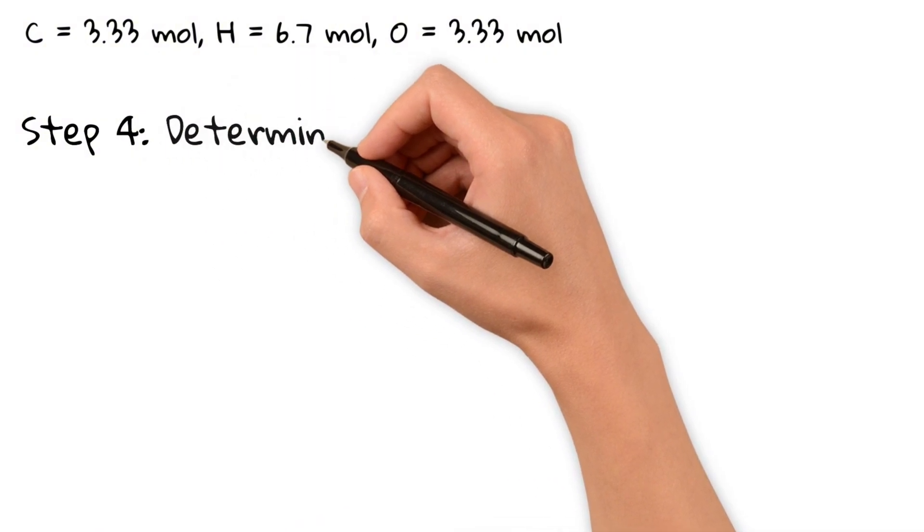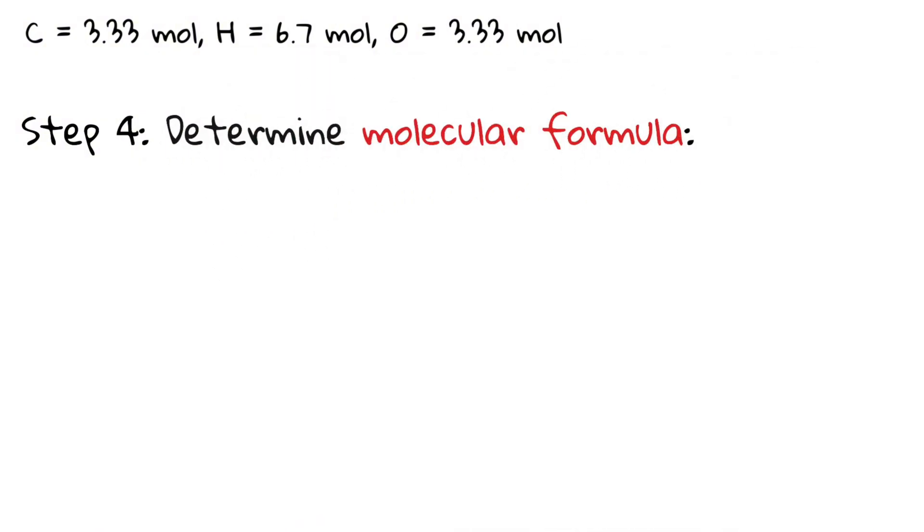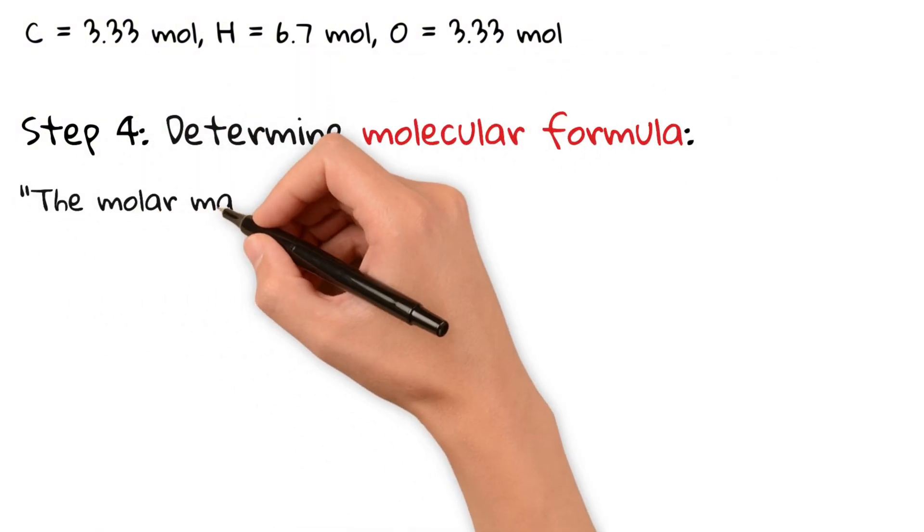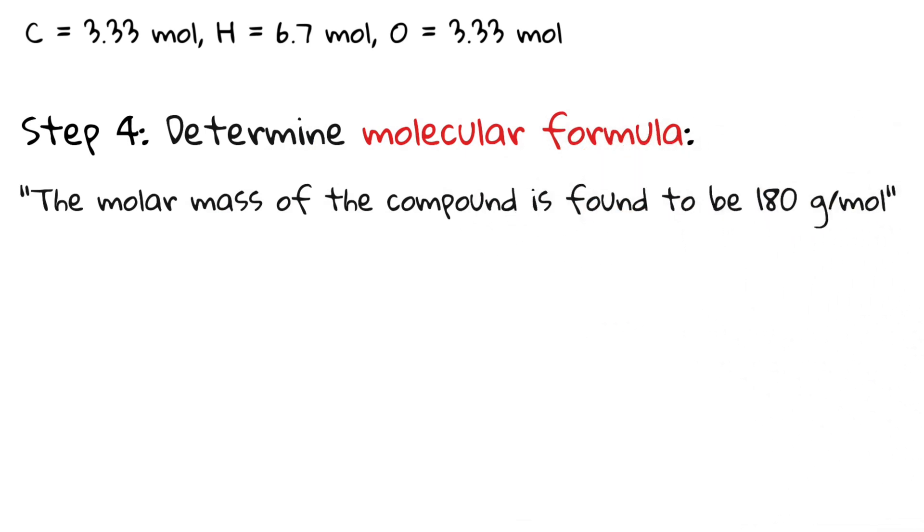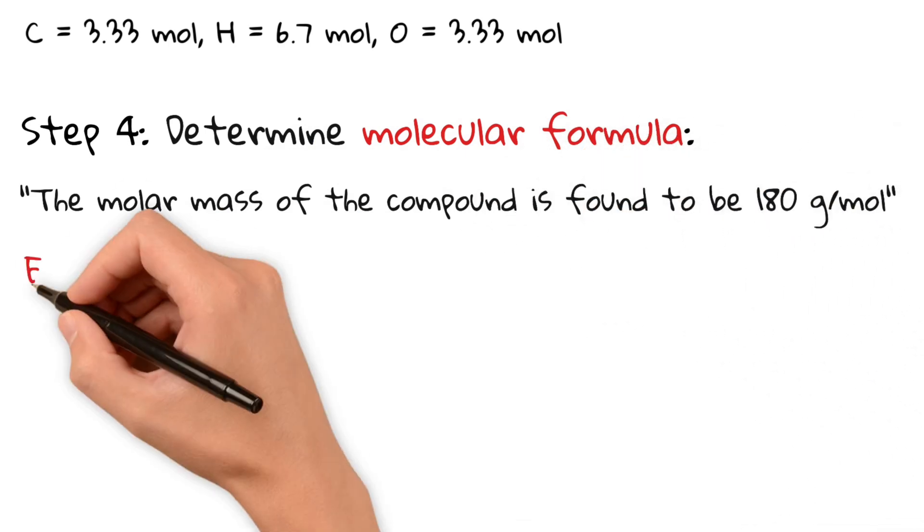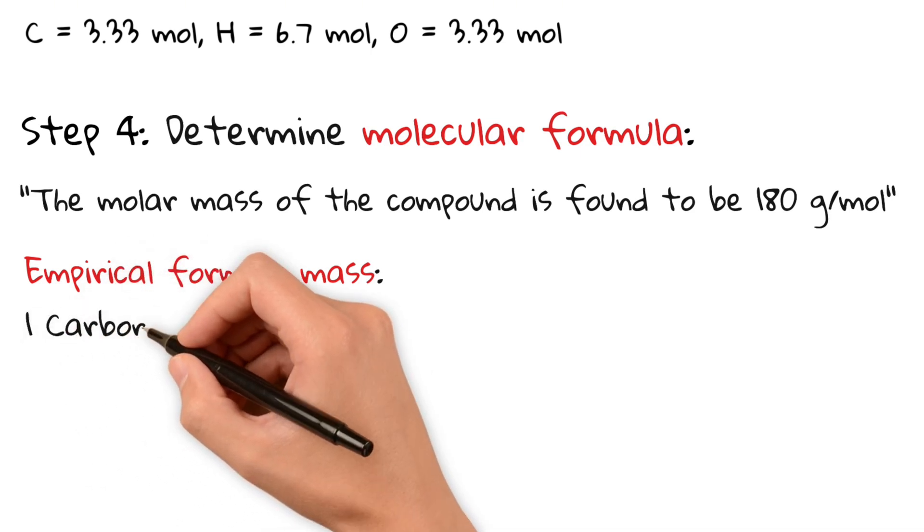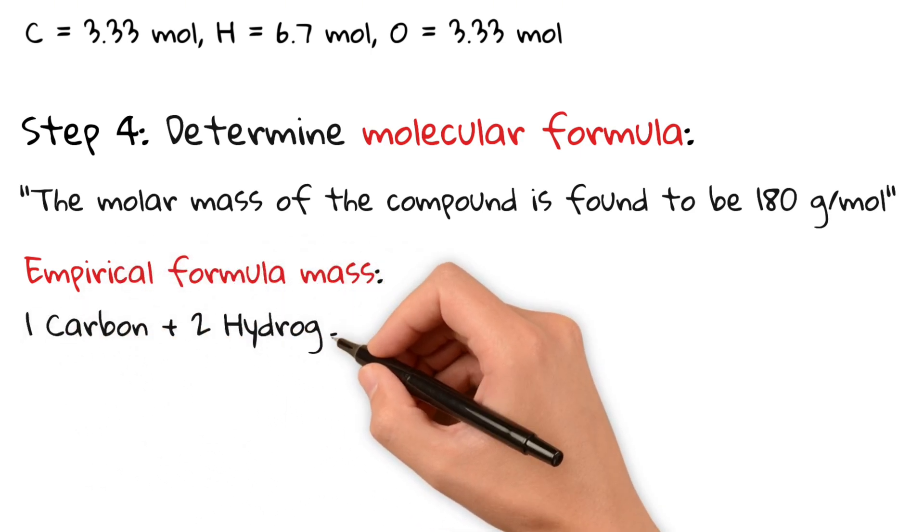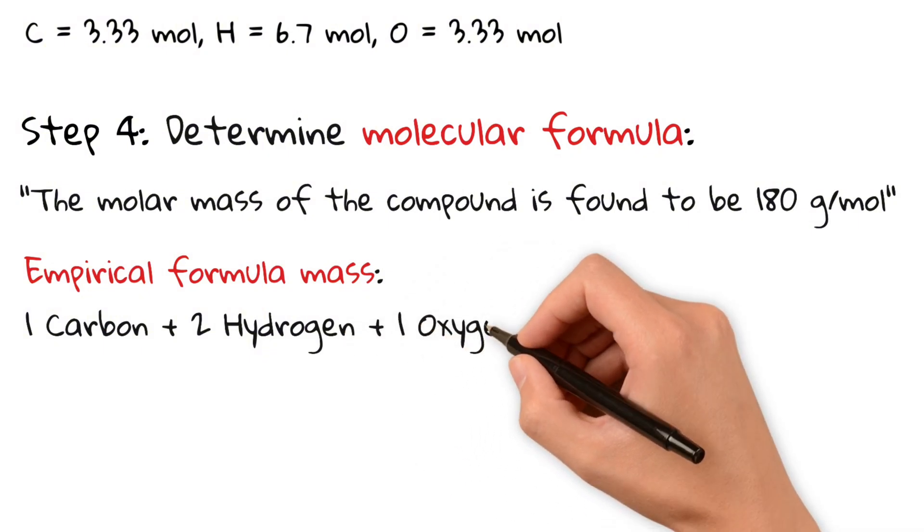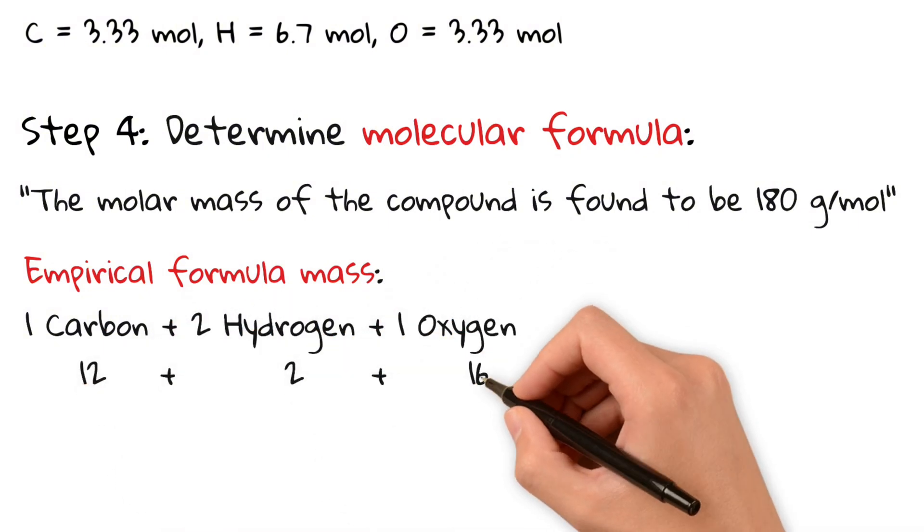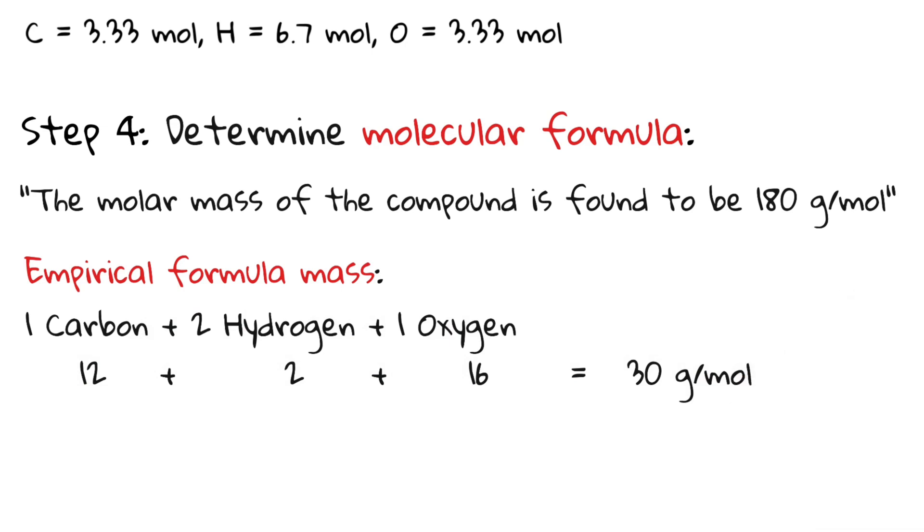Now to determine the molecular formula, you're given the molar mass of the compound. The molar mass is 180 grams per mole. Now we first check the mass of our empirical formula. We have 1 carbon, 12, plus 2 hydrogen, 2, plus 1 oxygen, 16, equals 30 grams per mole.